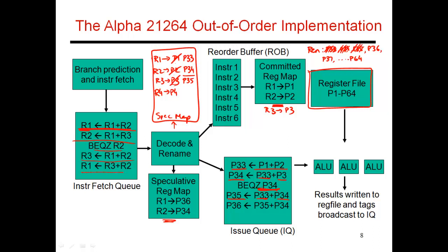The next instruction needs values in R3 and R2, which refer to P35 and P34. The destination gets the next register, P36. I update the map table to say the latest value of R1 is no longer in P33 — it is now in P36. At this point, I'm not putting P33 back in the free pool, because I still care about the value in P33. So as of now, P33 is still alive and not being put back into my rename pool.